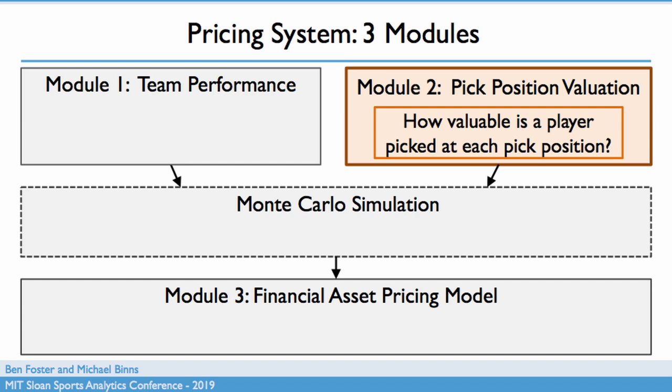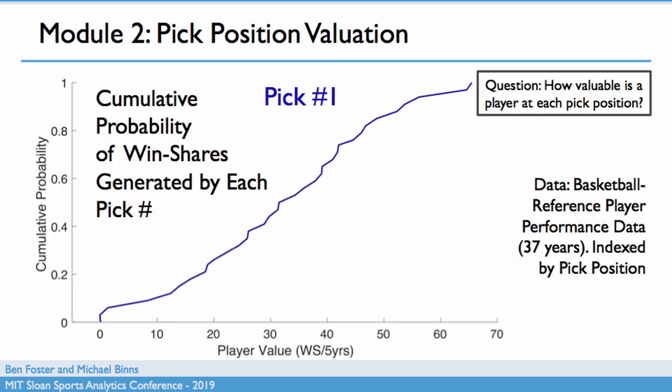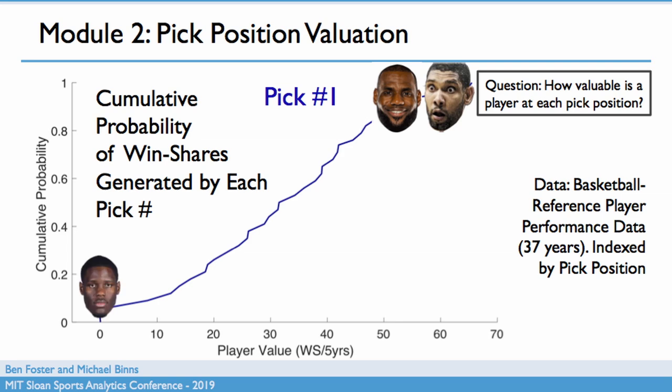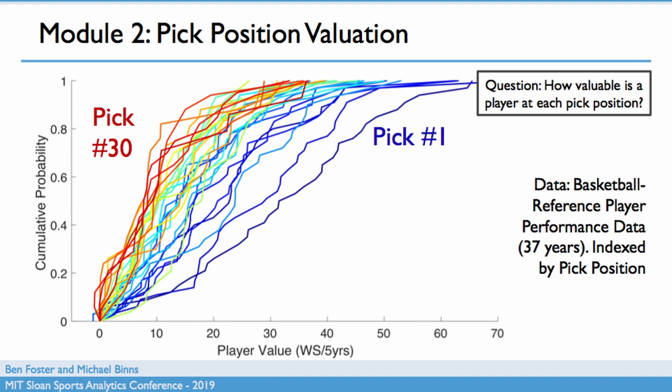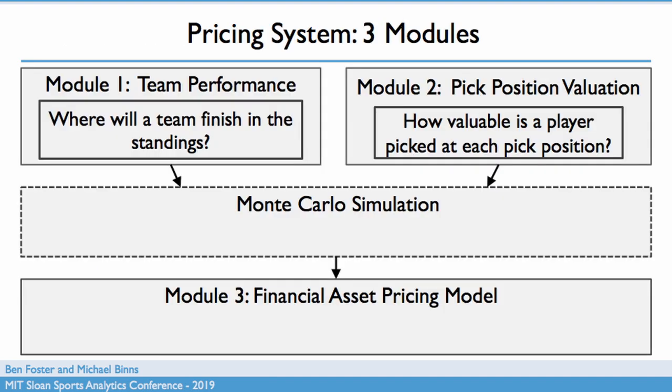The second module is pick position valuation. This tries to account for how valuable a player could be picked at any position — at the first pick, you can end up with Anthony Bennett or LeBron James, so we want to capture that variability. We build cumulative probability distributions using win shares, which is simple to interpret, though you could use any metric you want — proprietary metrics, PER, whatever. We used historic data from Basketball Reference, indexed by pick position. Tim Duncan and LeBron James are at the far end of the curve; Anthony Bennett is down low. We do this for every pick out to pick 30.